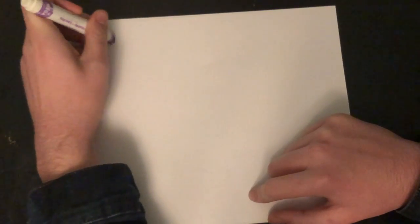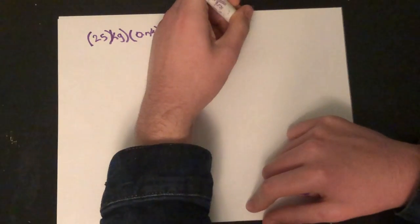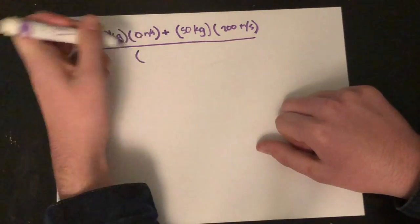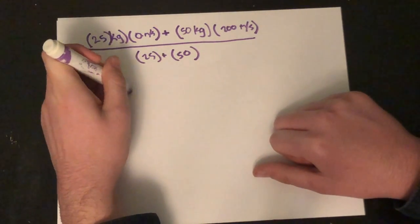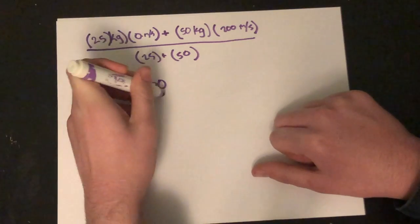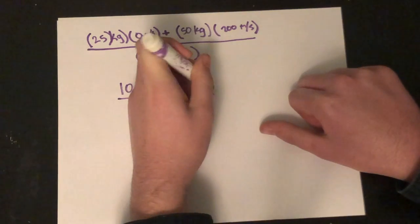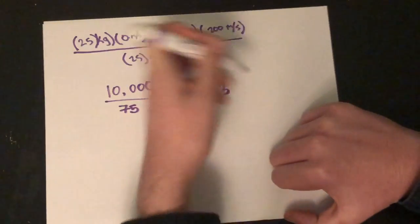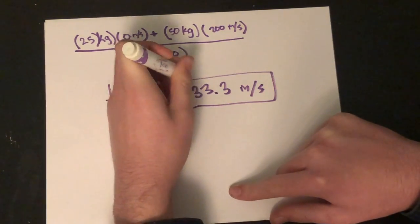We're going to start by finding the different momentum. So we have mass 1, which is of the hook, it's 25 kilograms and it's traveling at 0 meters per second. Then we're going to add that to the spring, which I didn't originally give it a weight, but I'm going to say it's 50 kilograms. And that's traveling 200 meters per second after the snap. And that's all going to be over the two masses added together, which equals 133.3 approximately meters per second.